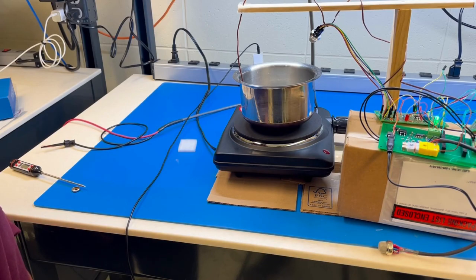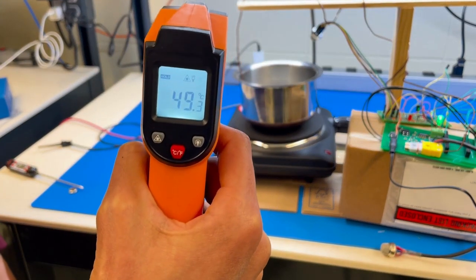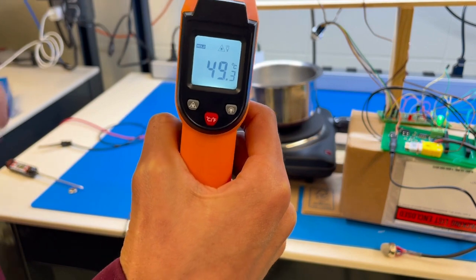We are going to demonstrate the temp turner working as a whole. Right now, I have water which is at 49.3 degrees Celsius according to this infrared thermometer.